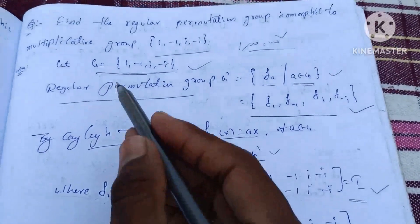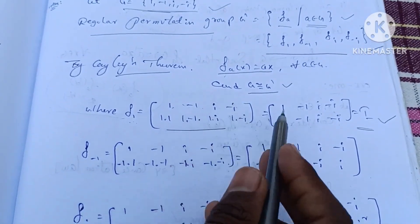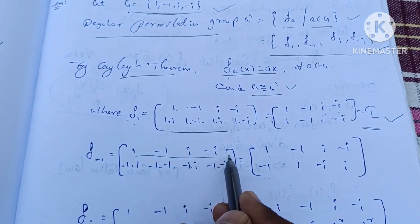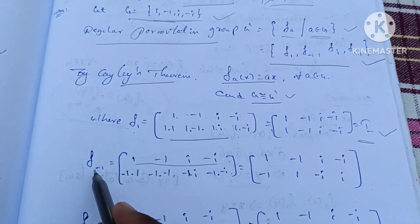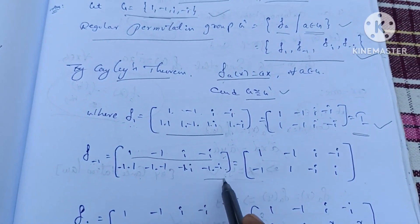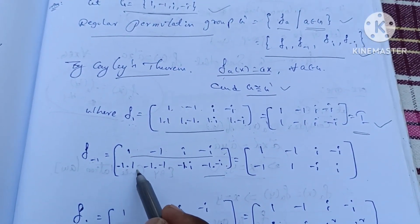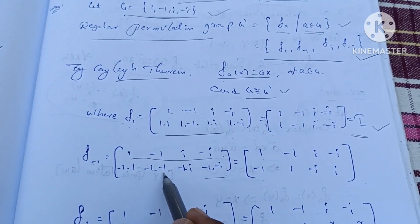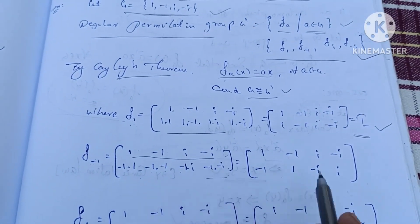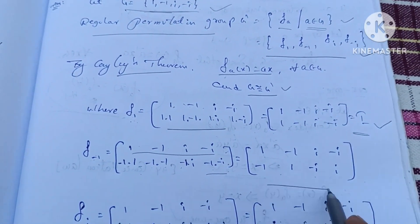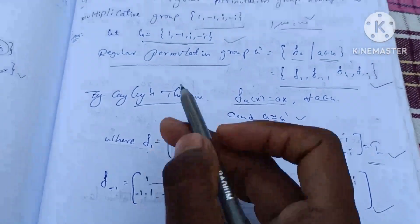So next, f_{-1}. f_{-1} is equal to: domain is 1, -1, i, -i. Then -1 into 1 gives -1, -1 into -1 gives +1, -1 into i gives -i, -1 into -i gives +i. So the values: 1 maps to -1, -1 maps to 1, i maps to -i, -i maps to i. So f_{-1} value is this.